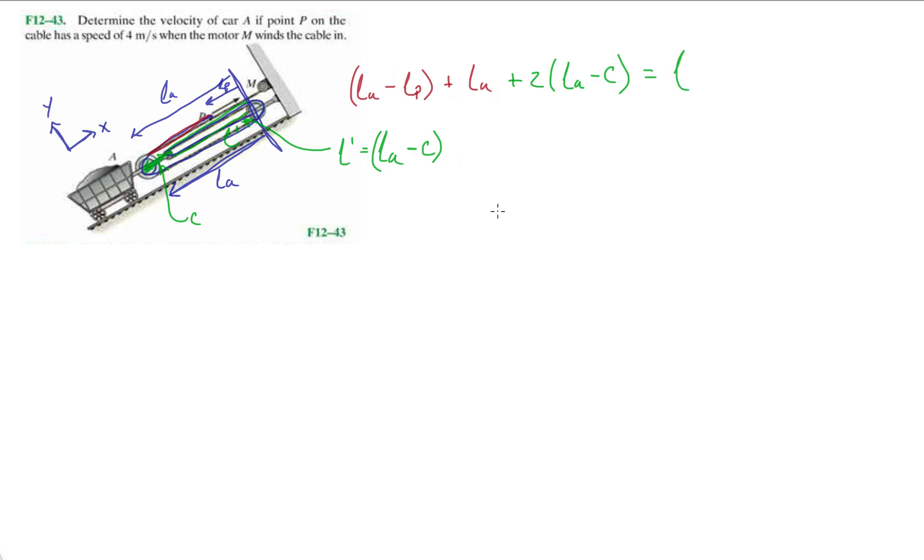When we sum them all up, we're going to get LA minus LP plus LA plus 2LA minus 2C equals L. Group your terms together and we have 4LA minus LP minus 2C equals L.